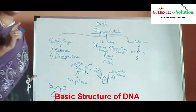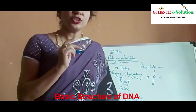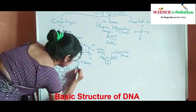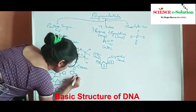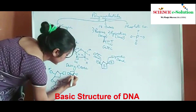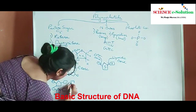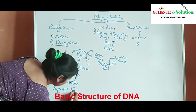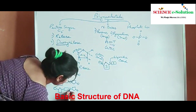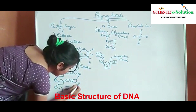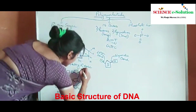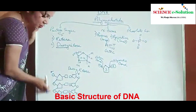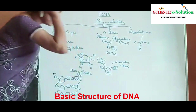DNA is not a single polynucleotide — it has two polynucleotide chains which run in the antiparallel direction. One chain will run from 5' to 3' and the other chain runs from 3' to 5'. The free ends are a free 3' end and a free 5' end on each strand respectively.